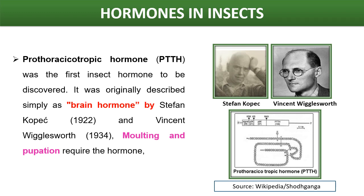Among all the hormones necessary for insect metamorphosis, one of the major hormones is the prothoracicotrophic hormone, abbreviated as PTTH. It was the first insect hormone to be discovered and was originally described as brain hormone by Stephen Kopek and Vincent Wigglesworth. PTTH is necessary during molting and pupation. The prothoracicotrophic hormone is a homodimer of two polypeptides of 109 amino acids. This hormone does not drive pupation directly but, as its name suggests, acts on the prothoracic glands.